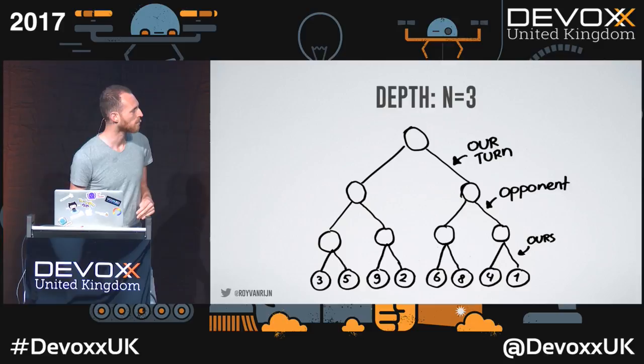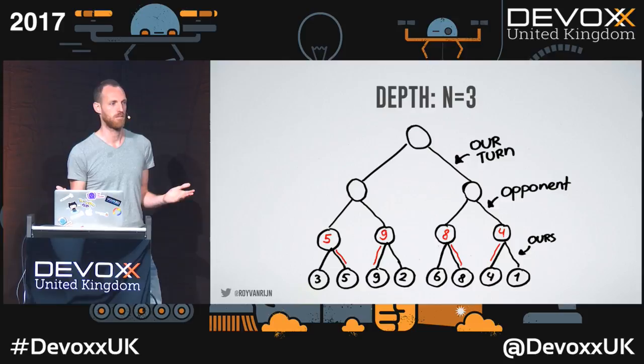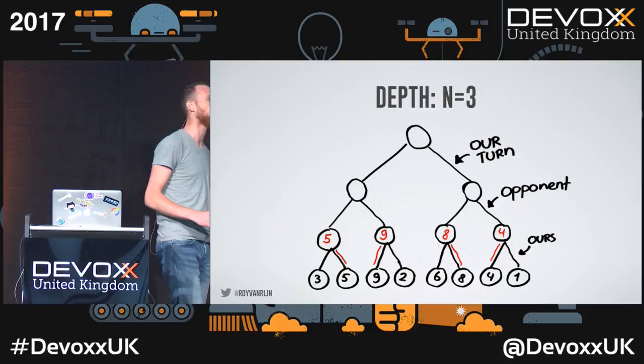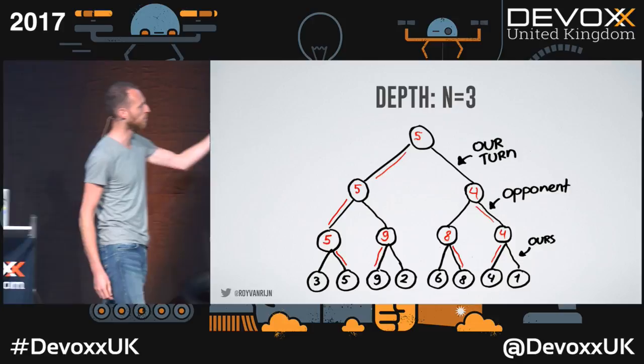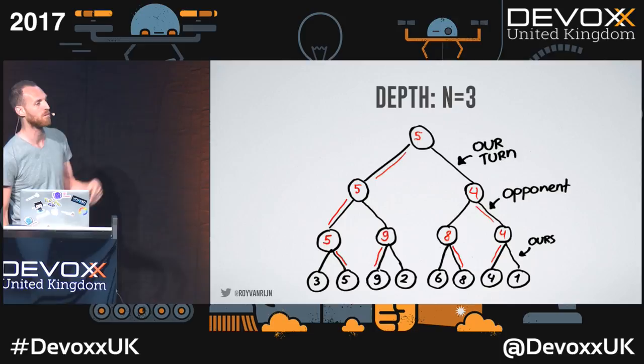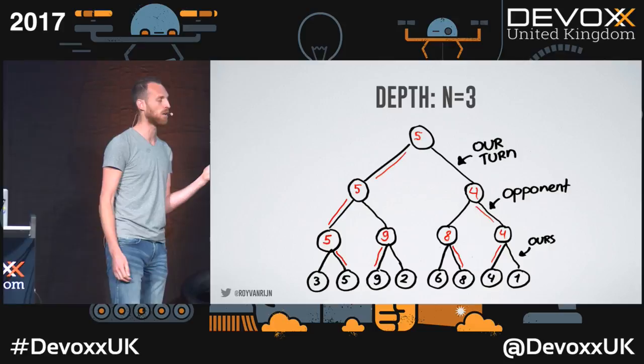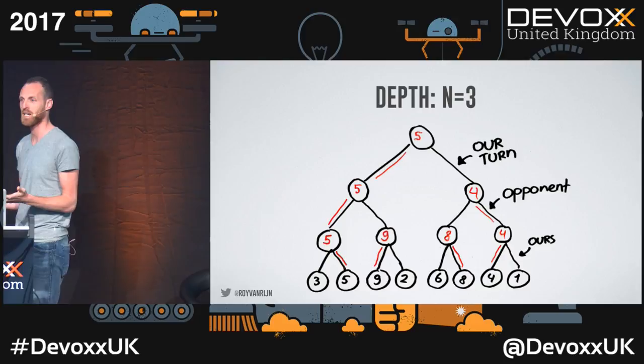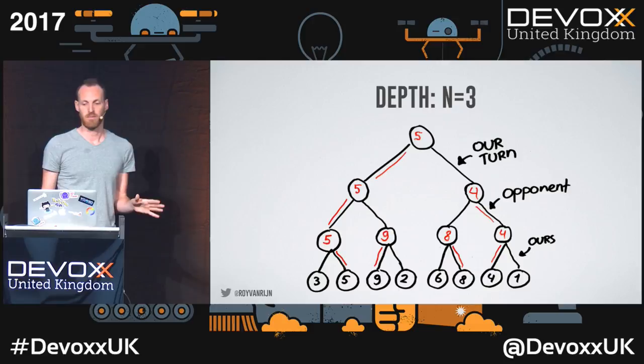Let's go back to the example. We start at the bottom — that's our turn, so we pick the highest value. When you move up one level, it's the opponent's turn, and the opponent will always pick the lowest value. So between five and nine, the opponent picks five, and between four and eight, the opponent picks four. At the top, it's our turn again, so we decide between five and four — five is best. In this game, if both players play perfectly, we'll end up at five. In a nutshell, this is Minimax, and this is how almost all game search algorithms work.